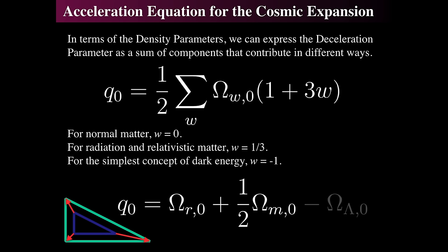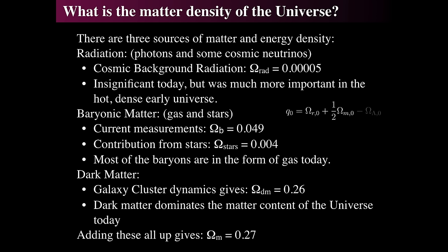Measuring the deceleration parameter consumed most of cosmological study from the 1950s through the 1990s — a 40-year quest to understand both the Hubble constant H₀ and the deceleration parameter Q₀. The quest was for two numbers: H-naught and Q-naught. What are they? That determines the future of the cosmos. It was a big deal — though not as big a deal today.